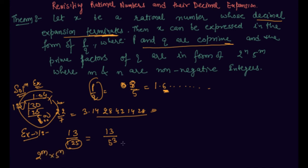So what I need to multiply is, if I will multiply 2 raised to power 3 in denominator and 2 raised to power 3 in numerator, what I get is 13 into 8 upon 10 raised to power 3. 13 into 8 is 104 upon 1000.